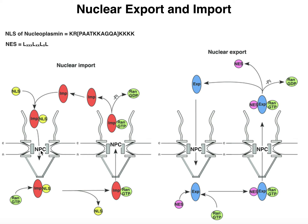The nuclear pore complex, along with some other pieces we'll talk about, is vital in the regulation of those things into the nucleus. Likewise, if something gets into the nucleus it ought to have a way to come out, so the NPC is also vital in regulating export of some substances. Both import and export are going to be heavily reliant on a G protein called RAN, which we'll get to eventually.